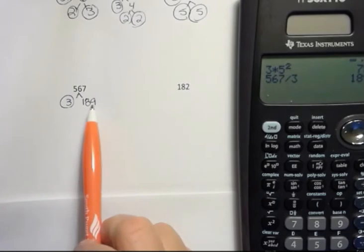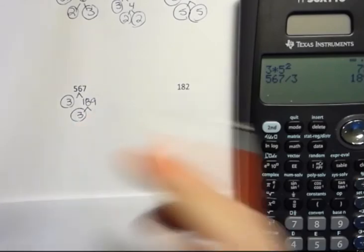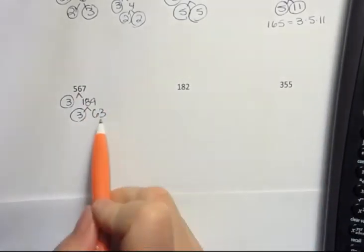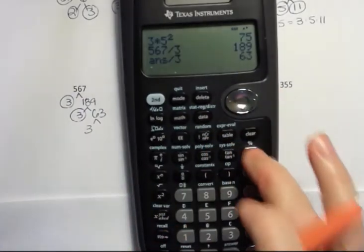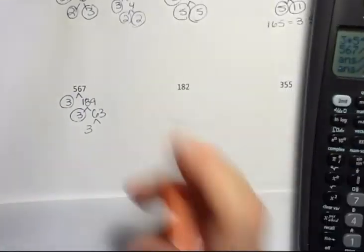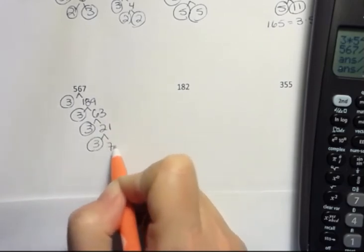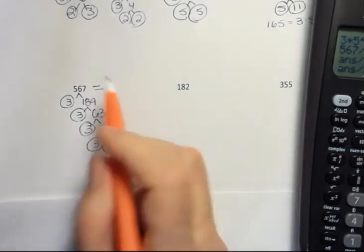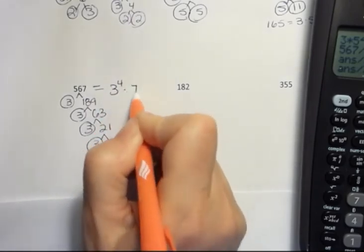Now I can do 9 and 8 is 17 plus 1 is 18. So 3 goes again. Now I can divide that by 3 and that gives me 63. Well, 3 goes into that again. I can divide 63 by 3 to get 21. And 3 goes into 21 again to get 7. That's a prime number. So this one, 567, actually has 1, 2, 3, 4 threes or 3 to the 4th power times 7.